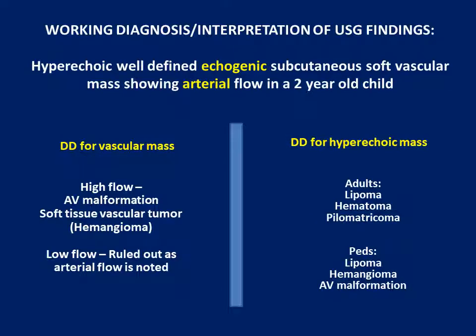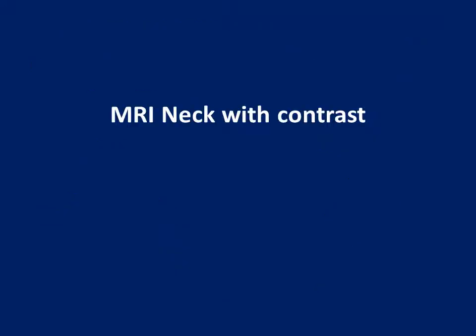The working diagnosis is a well-defined hyperechoic mass with arterial flow. There are few lesions which show arterial flow — broadly classified as AV malformations and neoplasms. The typical neoplasm prototype is the hemangioma. If blood vessels are seen but there is no arterial flow, it is a low flow malformation. The differential diagnoses for hyperechoic mass lesions include lipoma, hematoma, pilomatricoma, hemangioma, and AV malformation. In adults, the top differential is lipoma; in the pediatric age group, it would be hemangioma.